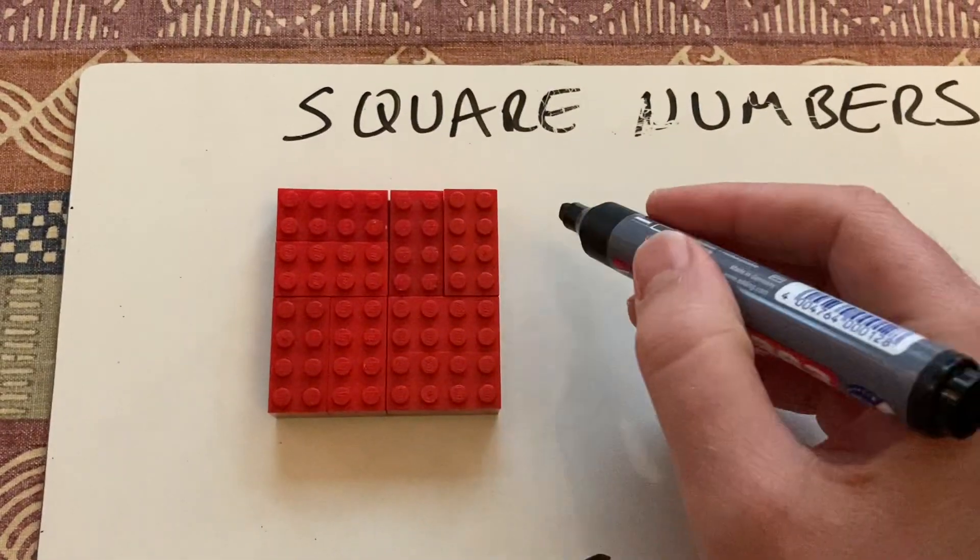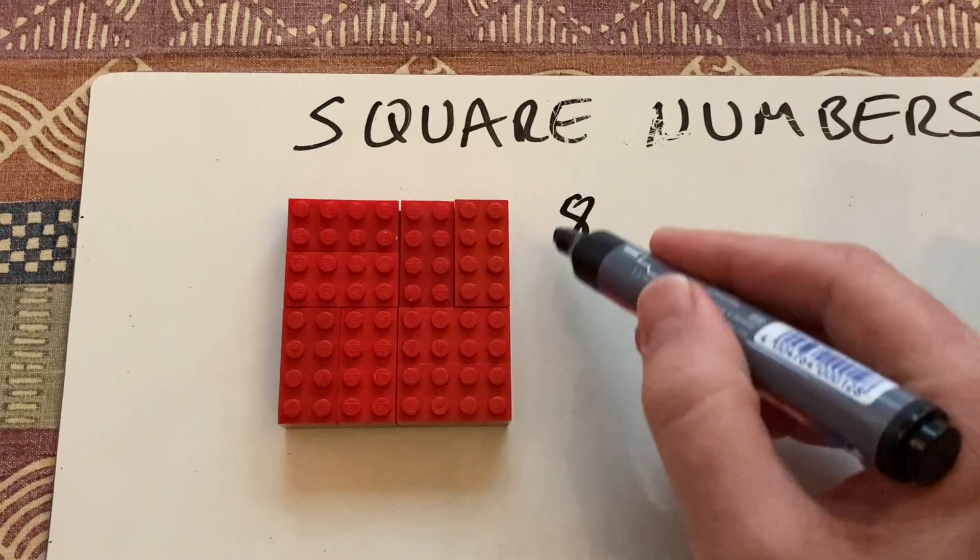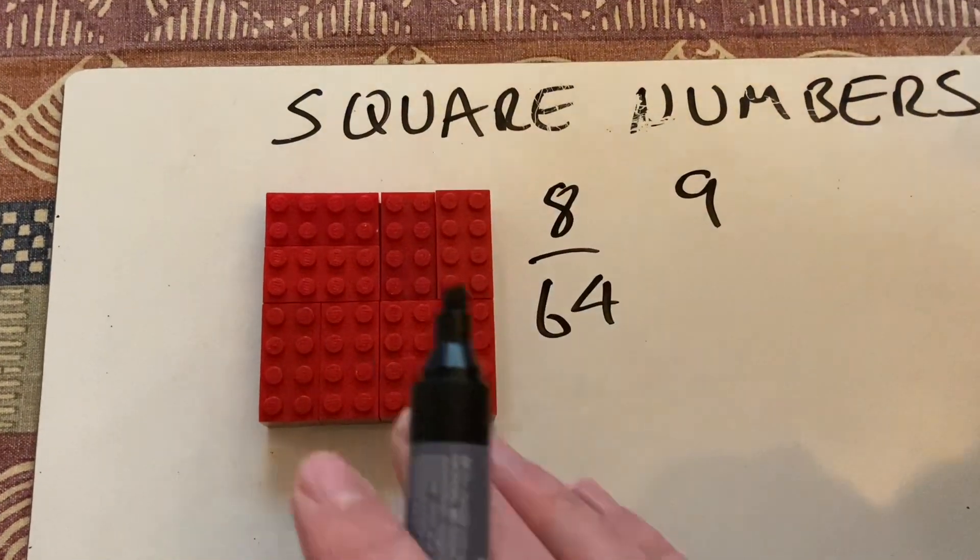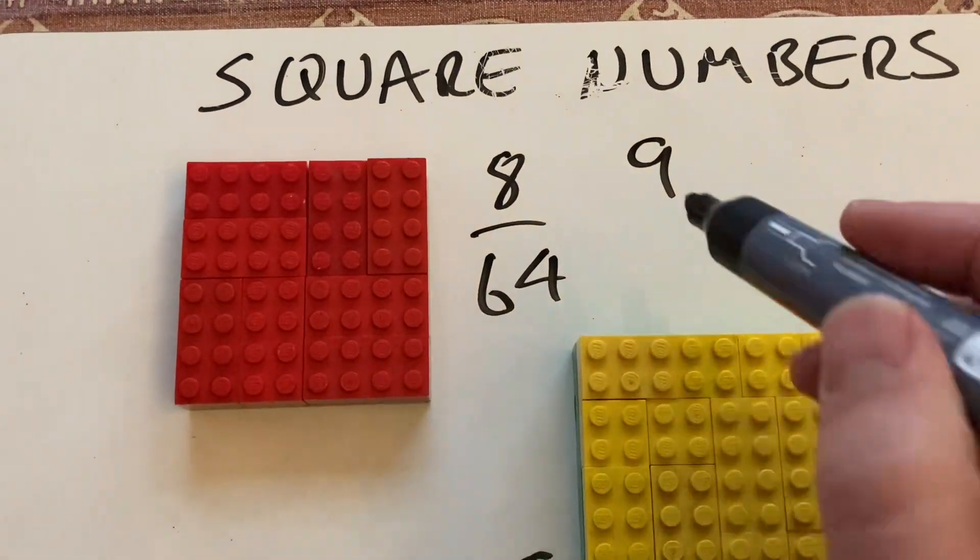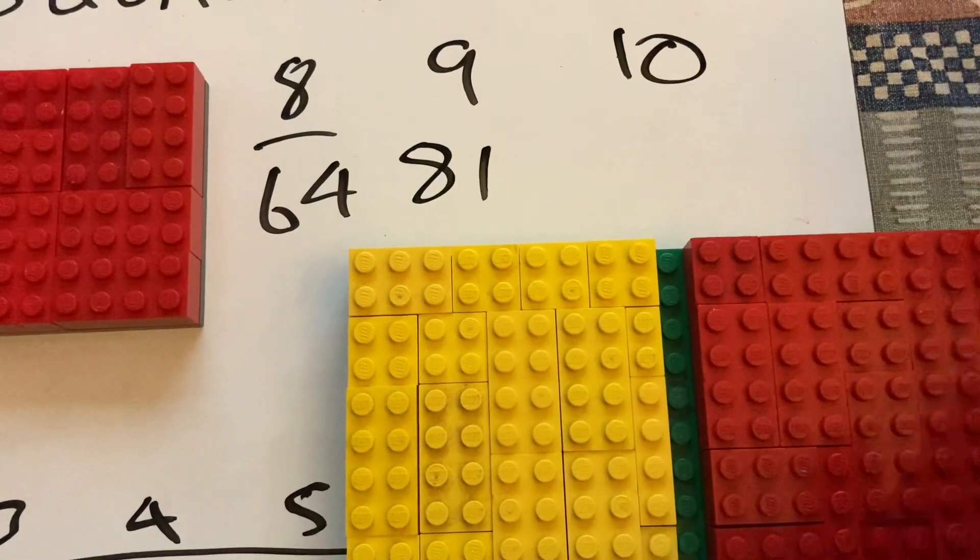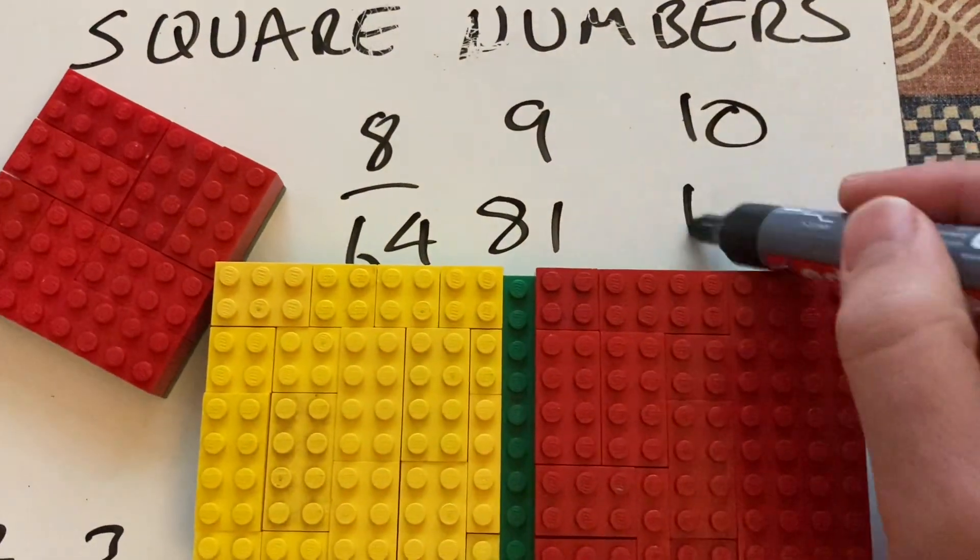So that's eight. Yeah, eight times eight is... Sixty-four. Nine times nine. The yellow one is 81. That's 81. And then it's ten. Ten times ten is a hundred. Ten times ten is a hundred.